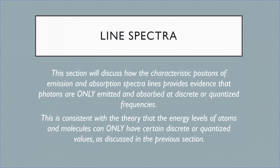Hello, this is part 2 of the lecture for Quantum Physics II. For this session, the phenomenon known as line spectra will be presented. We're going to learn about absorption and emission line spectra and how this provides evidence that photons are absorbed or emitted at discrete or quantized frequencies. And this is consistent with the theory that atoms and molecules can only have certain discrete or quantized values, as presented in part 1.